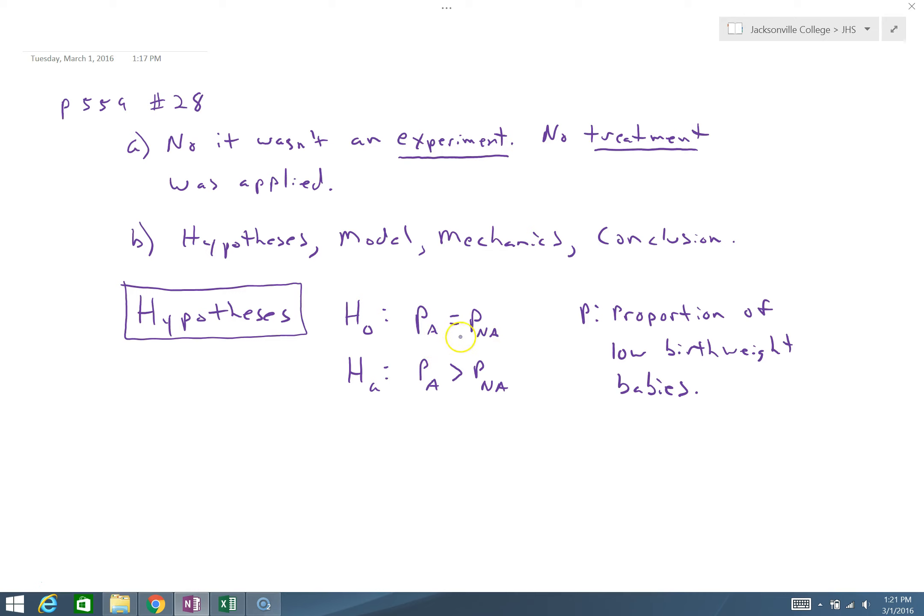When we use these descriptive subscripts like this, we don't have to distinctively identify both of these. If you read the question, it would be pretty clear that this P sub A would be the proportion that suffered from air pollution and P sub NA is no air pollution. And we're going to define an alpha. The problem doesn't tell us an alpha, so let's go with our default of 0.05.